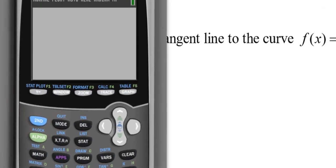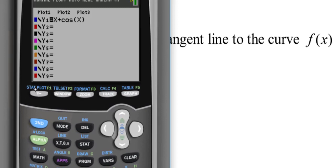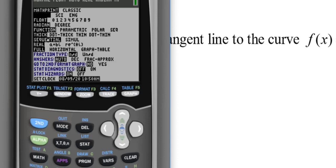Looking at our graphing calculator, going to y equals, I'm going to type in the function x plus cosine of x, and I'm specifically going to pay attention to the point (0, 1). Please make sure you are in radian mode. I am in radian mode.